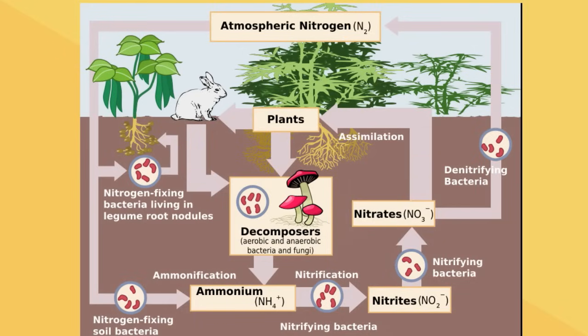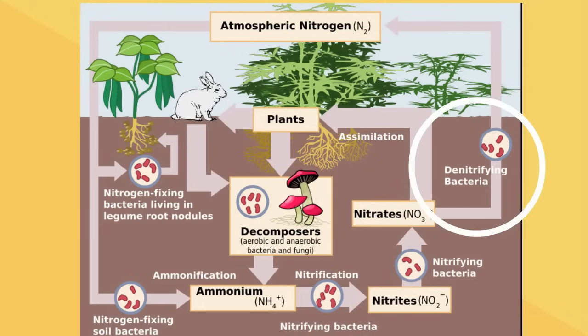At this point plants can absorb the nitrogen in a process called assimilation. However, not all of the nitrate is absorbed — some of it goes to bacteria that release the nitrogen back to the atmosphere in a process called denitrification. The nitrogen returns to the atmosphere.